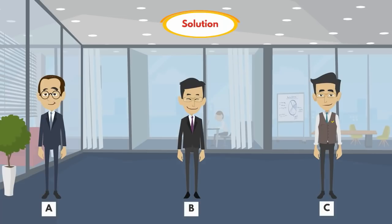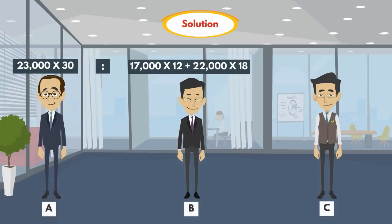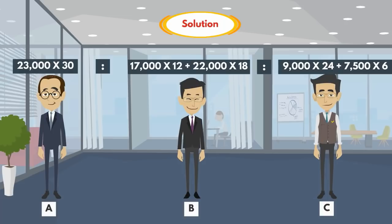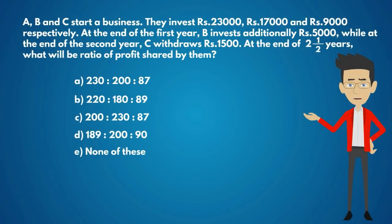The profit ratio of A, B, C is: 23,000 × 30 : (17,000 × 12 + 22,000 × 18) : (9,000 × 24 + 7,500 × 6). After solving this, we get 230:200:87. So the answer is option A — 230:200:87.